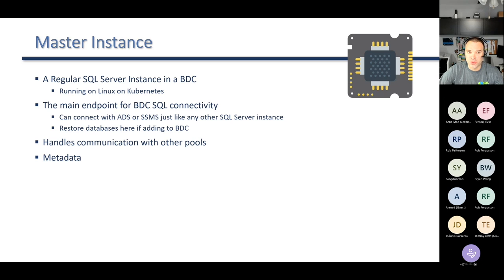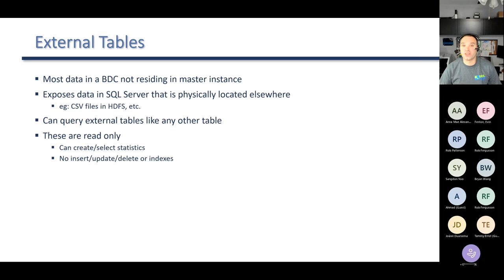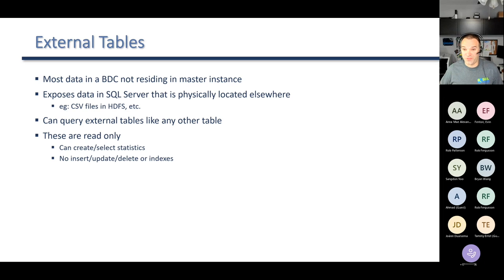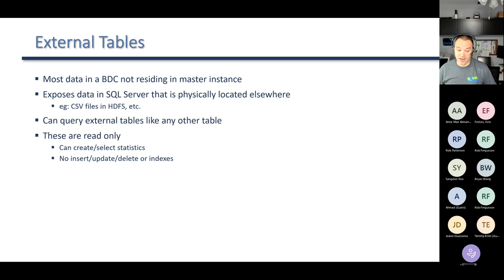I'm going to dedicate a slide here to external tables because they're quite important. Big Data Clusters heavily leverage PolyBase, and external tables are the key feature of PolyBase. Most of the data in a Big Data Cluster that is not residing on the master instance will be manifested as external tables. These allow you to expose data in SQL Server that is physically located elsewhere — so if you have data in a CSV file sitting on Hadoop, you can bring that into SQL Server very easily through an external table and query it as if it were data physically on that server.